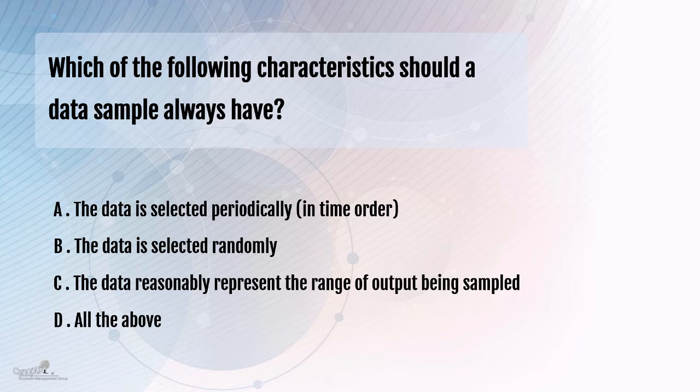Now, knowing this concept, let's look at the options. The first option is that the data is selected periodically, that is in time order. The data is selected randomly. Data is reasonably representative of the range of the output being sampled. And the last option is all the above.